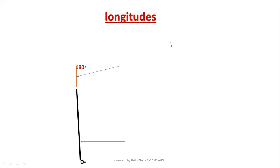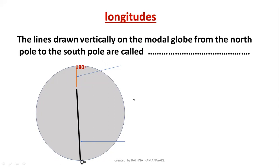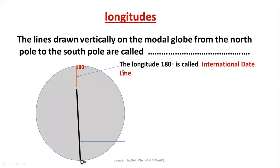Now let's talk about longitudes. The lines drawn vertically on the model globe from the North Pole to the South Pole are called longitudes. On the model globe there are 360 longitudes — 180 east longitudes and 180 west longitudes. Longitude 180 degrees is called the International Date Line.